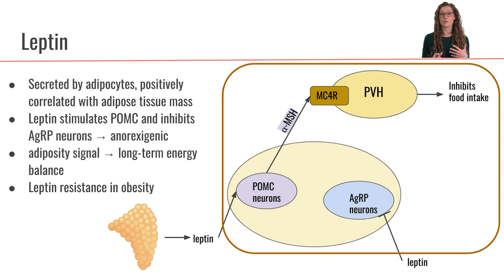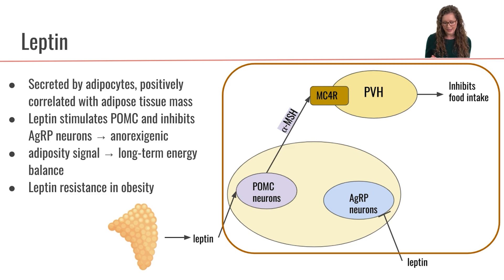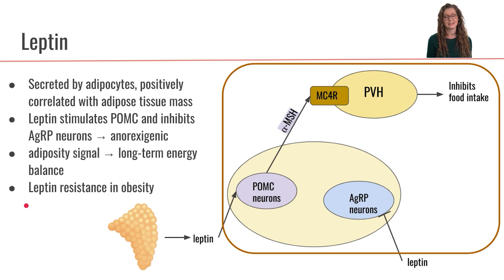One challenge that occurs is that with obesity there seems to be a resistance to leptin that develops. With obesity there is a larger adipose tissue mass, so you would think more leptin means more inhibition of food intake. However, that leptin seems to be less effective at inducing satiety. It is thought that when leptin binds to these neurons, there is a problem in the signaling pathway downstream of the leptin receptor that makes it less effective. This is what we call leptin resistance, where leptin is no longer as effective at inducing satiety.